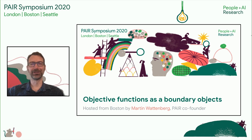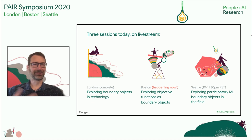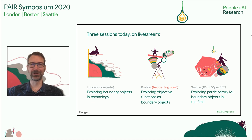This is a virtual symposium, so let's get oriented. This is one of three sessions on livestream. There was a session in London that happened earlier today. This one is happening now. Our theme is exploring objective functions as boundary objects, and I'll explain what that means in a moment. There's another session happening later today on Seattle time.